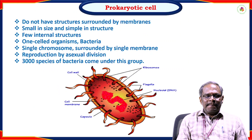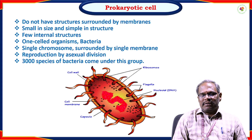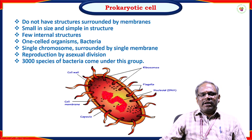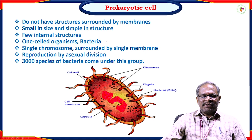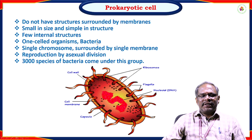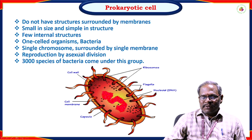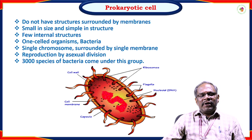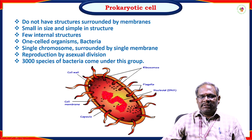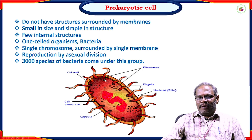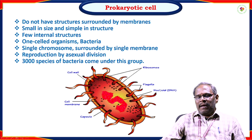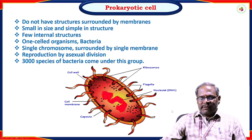Coming to the first type: prokaryotic cells are simple in structure and small in size. They do not have structures surrounded by membranes. They have few internal structures. About 3000 species of bacteria come under this group. This contains a single chromosome surrounded by a single membrane, and reproduction is by asexual division. It contains a cell wall, ribosomes involved in protein synthesis, flagella, cilia, cell membrane, capsule, and a nucleoid region containing DNA material.